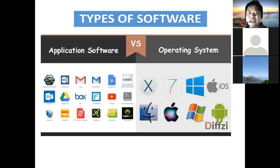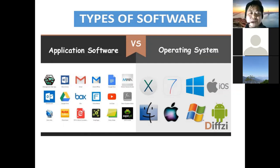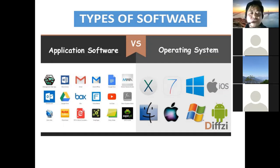The operating system operates all the systems of computers and other devices — it supports the system to operate. It manages hardware, software, and data. Application software is used according to our needs: if we want to do typing, we need typing software; if we want to edit photos, we need Photoshop software; if we want to do accounting, we use Tally software; if we want to watch online videos, we install the YouTube application.